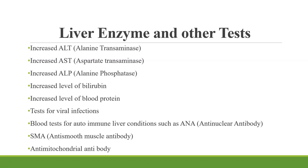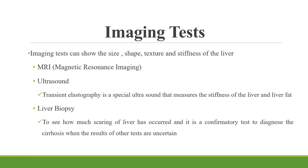Commonly advised liver enzyme tests are increased ALT, increased AST, and ALP. There is an increased level of bilirubin. There are also tests needed to be done for viral infections, and blood tests for autoimmune liver conditions such as anti-nuclear antibody, anti-smooth muscle antibody, and anti-mitochondrial antibody.